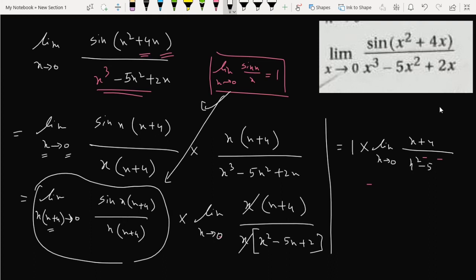If I put the limit here, x equals zero in this particular term, it becomes zero plus four by zero minus five times zero plus two. This becomes four by two, that is two. This is our answer.